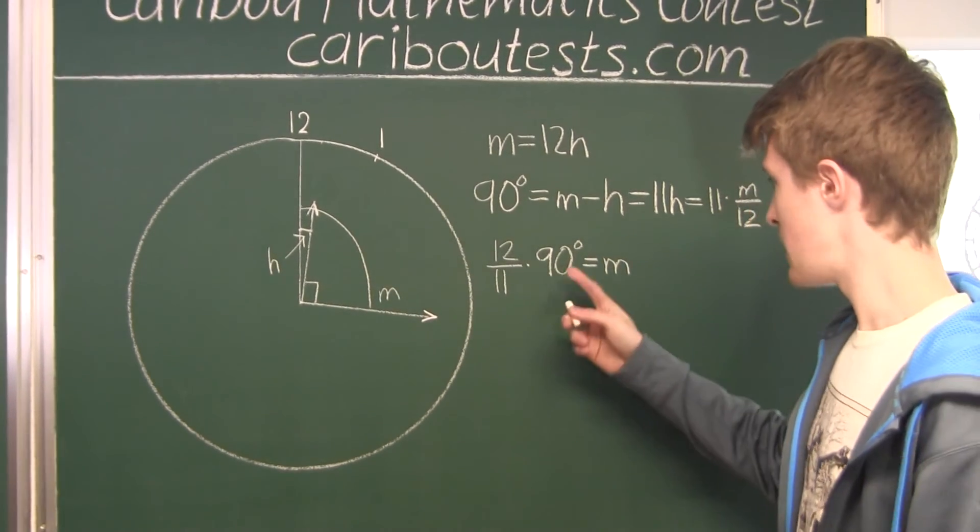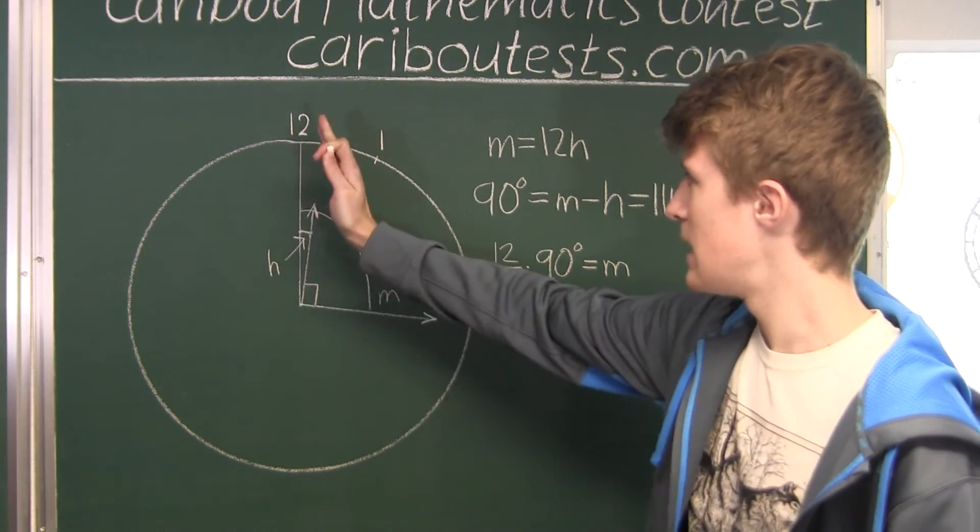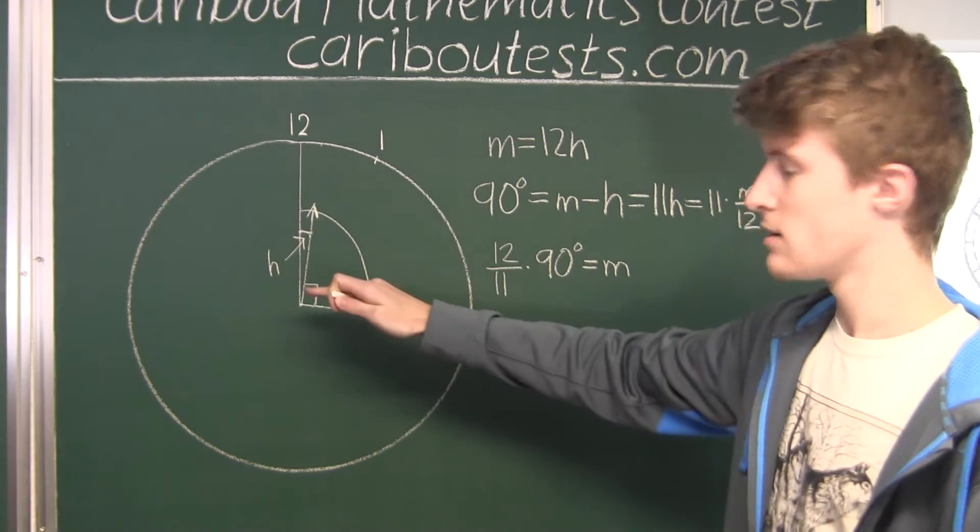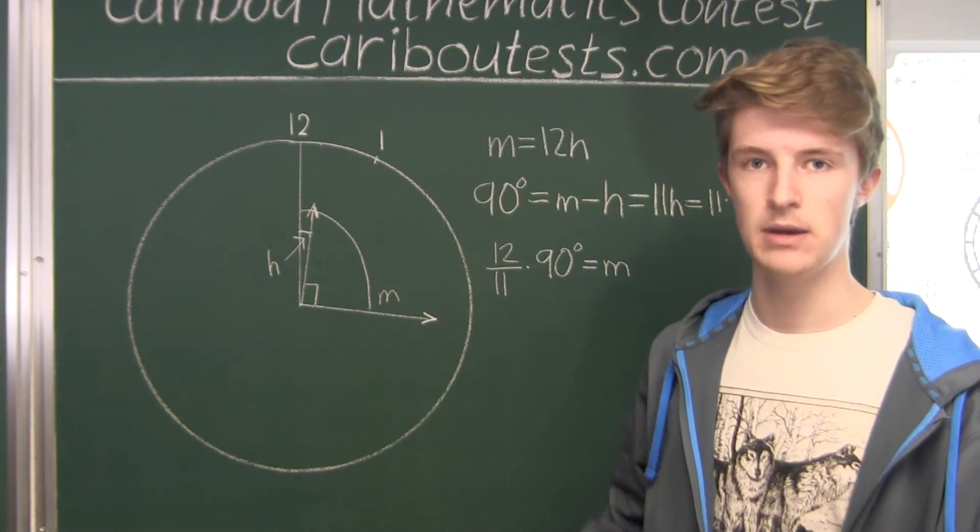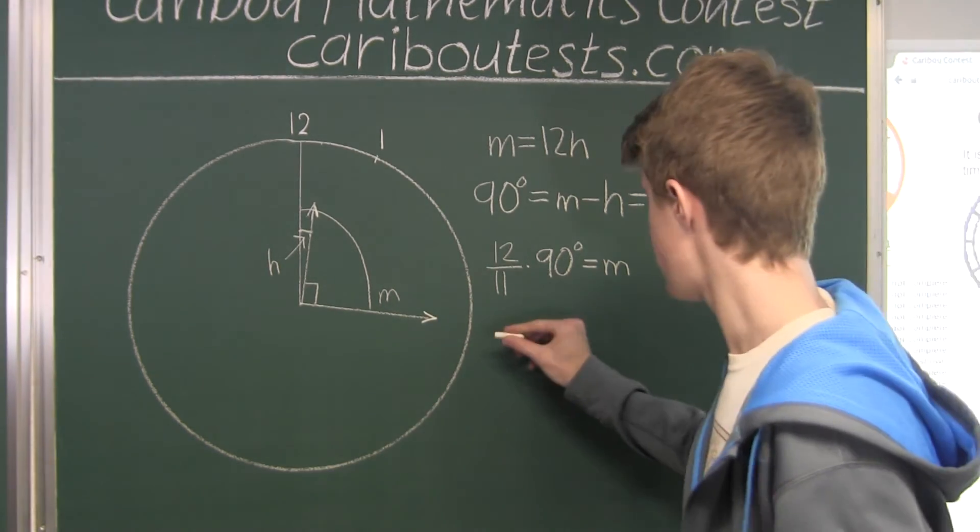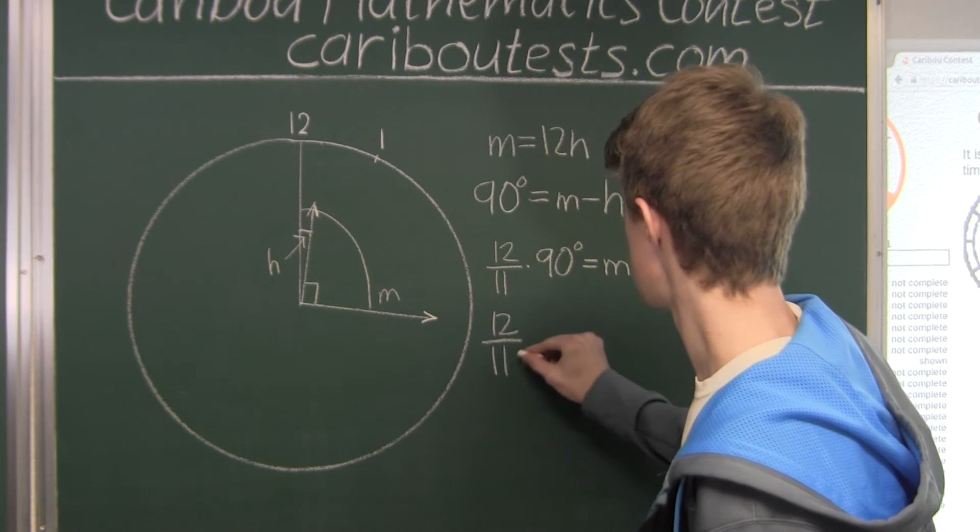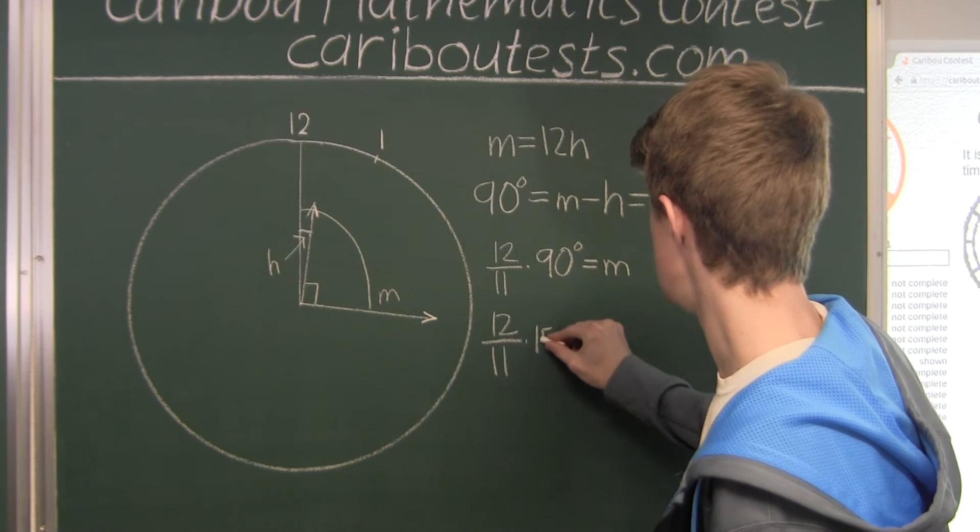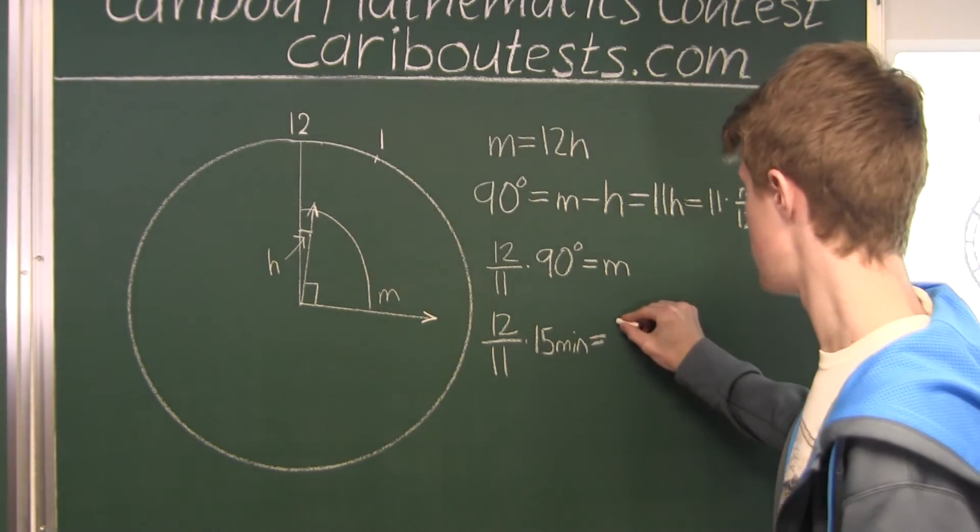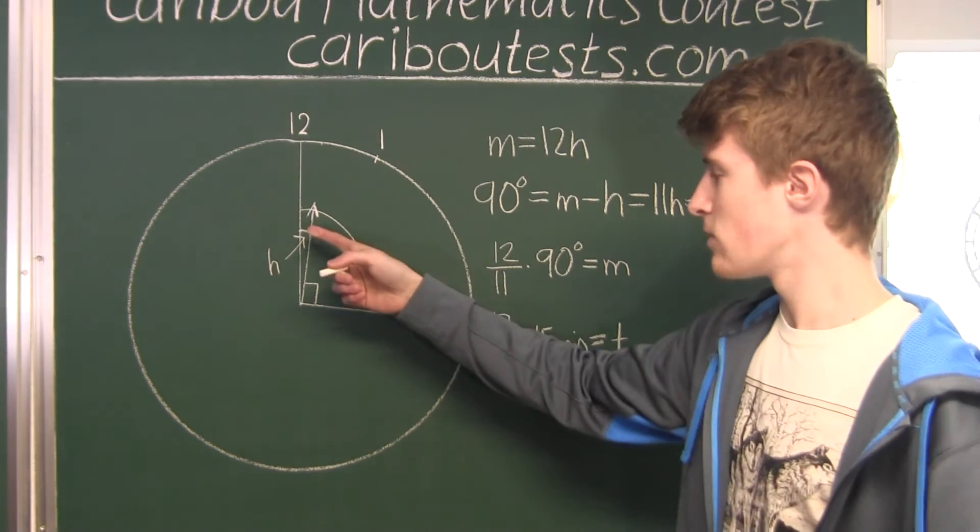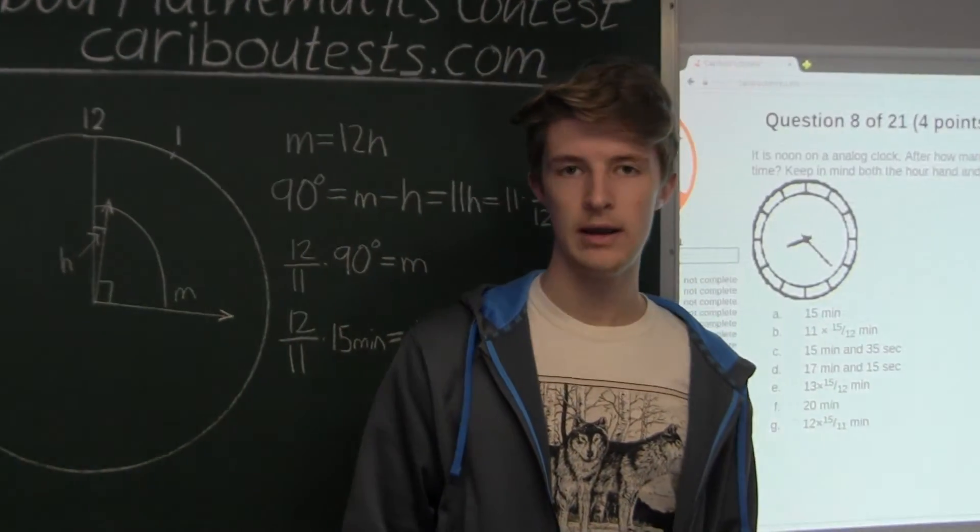And we know that ninety degrees with the hour hand, if the hour hand was at twelve, then ninety degrees means the minute hand is a quarter of an hour around, which is fifteen minutes. It's sixty minutes divided by four. So therefore, we would have twelve over eleven times fifteen minutes.